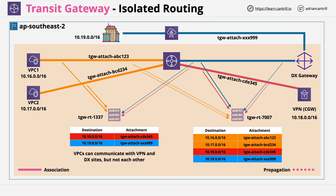You need to understand the difference between association and propagation, and how we've architected this solution — the VPC attachments use a separate route table which they don't propagate their CIDR ranges into. Remember, route tables are used for outgoing traffic, so the route table used by the VPC attachments doesn't need prefixes for the VPCs themselves, because we don't want VPC1 to have any awareness of VPC2. That's everything for this theory lesson — you'll get to experiment with these concepts in an upcoming demo lesson.